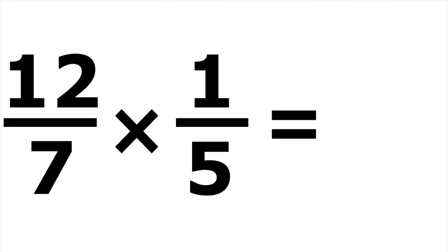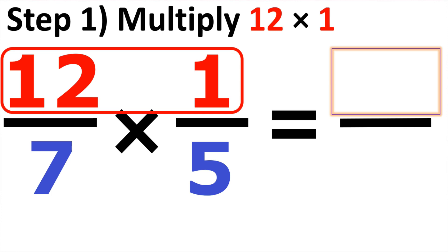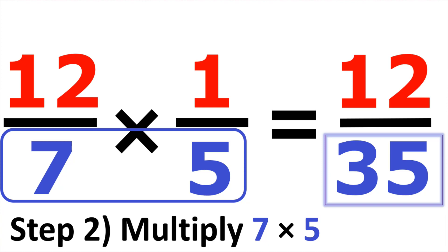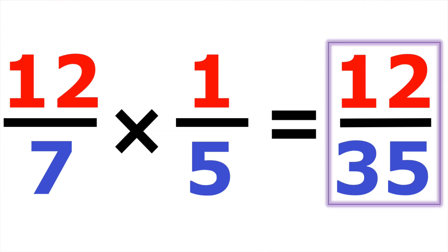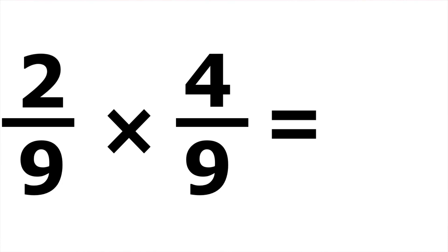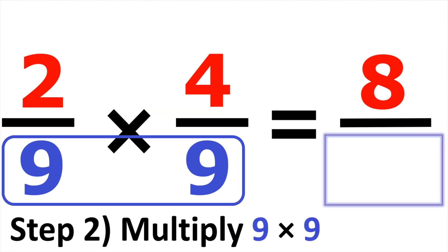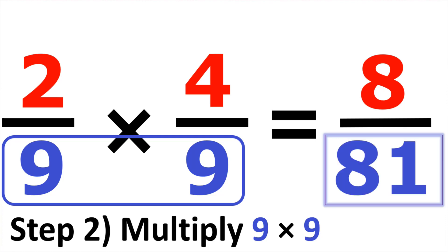Example number sixteen, we have twelve over seven times one over five. Multiplying straight across: twelve times one gives us twelve. At the bottom, seven times five gives us thirty-five, so the answer is twelve over thirty-five. Number seventeen, we have two over nine times four over nine. Two times four gives us eight. At the bottom, nine times nine gives us eighty-one.